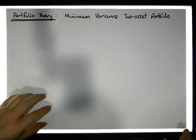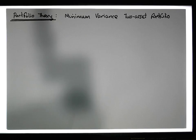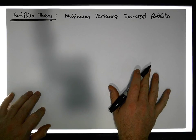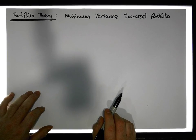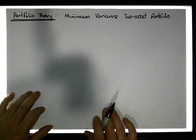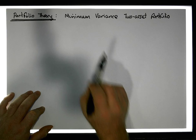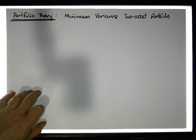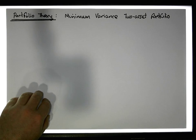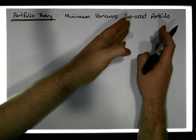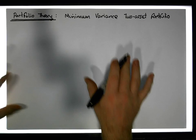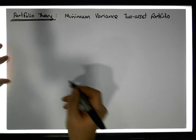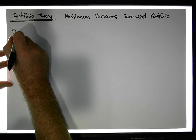Hi guys, this is Jonathan Lambert with the Mathematics Development and Support Service at the National College of Ireland. This short video, another in our series dealing with portfolio theory, is going to detail how to calculate a two-asset portfolio — and more importantly, how to calculate a minimum variance two-asset portfolio. Before we can begin, we need two assets to start with.